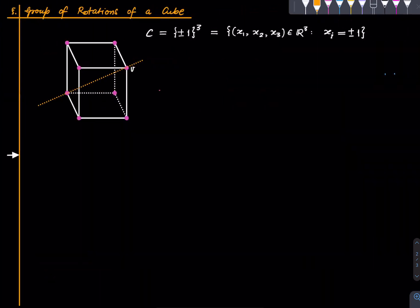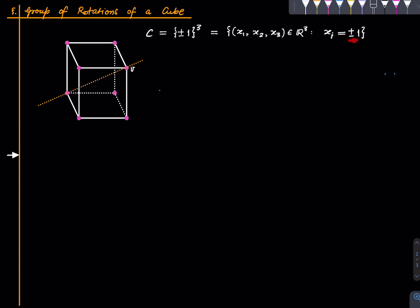Here is R^3. We define the cube C as the set of points in R^3 such that each coordinate is either +1 or −1. So there are eight vectors. It looks something like that, with the coordinate axes shown, and the cube is that shape.